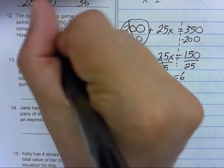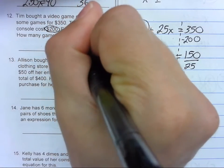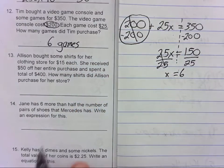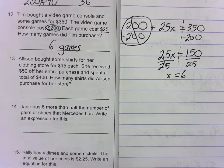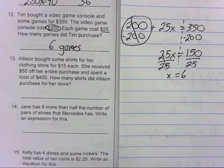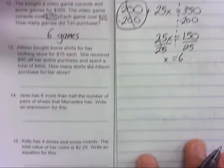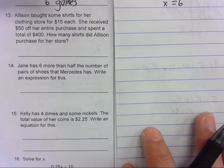So he purchased 6 games. Now you can read this problem and kind of check yourself because you know that you have to get a whole number. You can't buy four and a half games. In terms of this problem, it has to be a whole number.